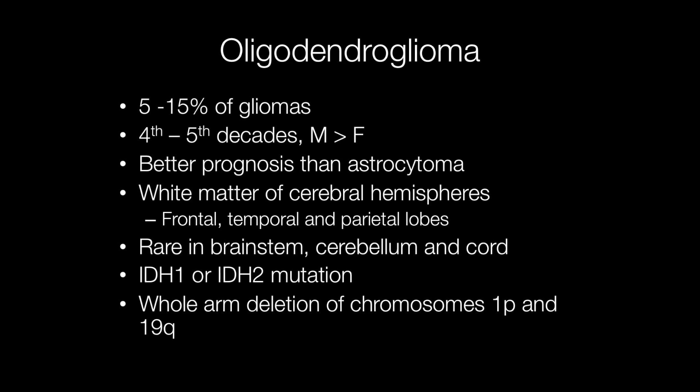Oligodendrogliomas account for 5 to 15% of gliomas and tend to occur between the fourth and fifth decades, more frequently in males than females with a ratio of 2 to 3. The most frequent location is the frontal lobe, followed by temporal and parietal lobes, and they arise in the white matter. They rarely occur in the brainstem, cerebellum, and spinal cord.